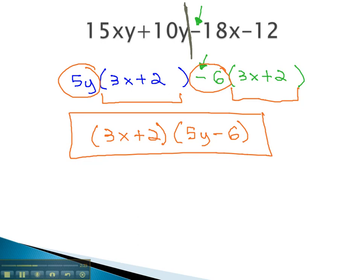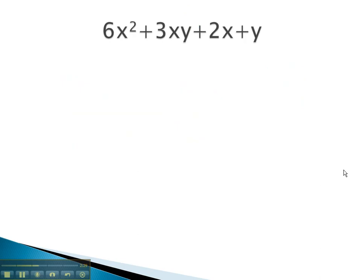Let's try another problem where we're able to factor it into two binomials by using grouping on each side. Again, to group, we will split the problem right after the second term before the next sign. On this problem, on the left, we see we have a common factor of 3x. When we factor out the 3x, we're left with 2x plus y.